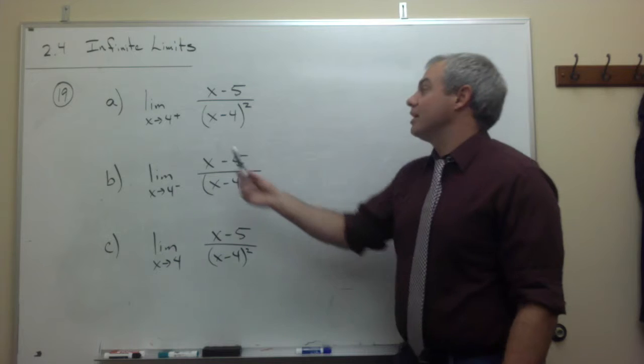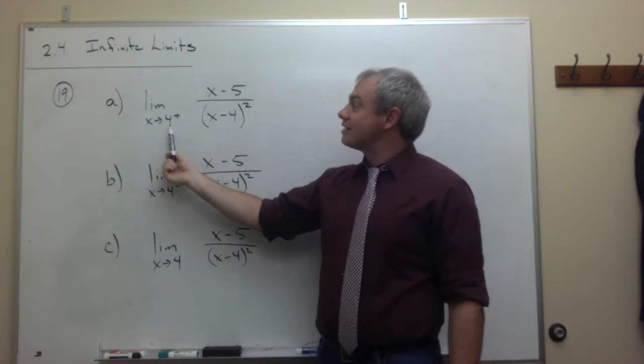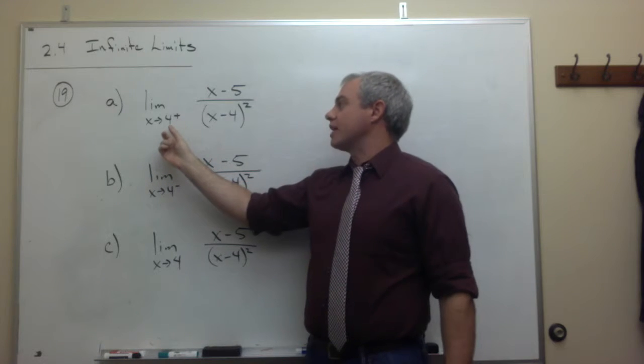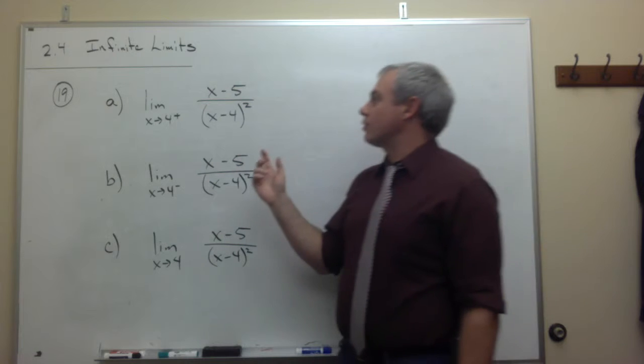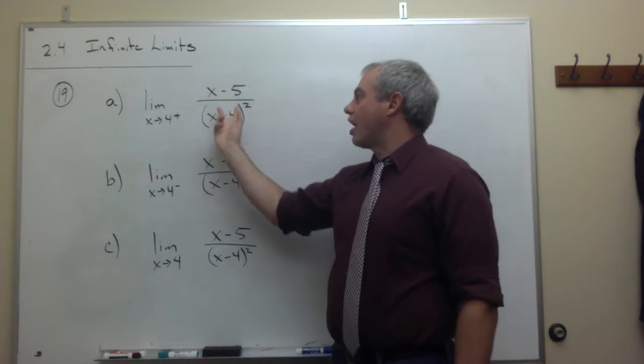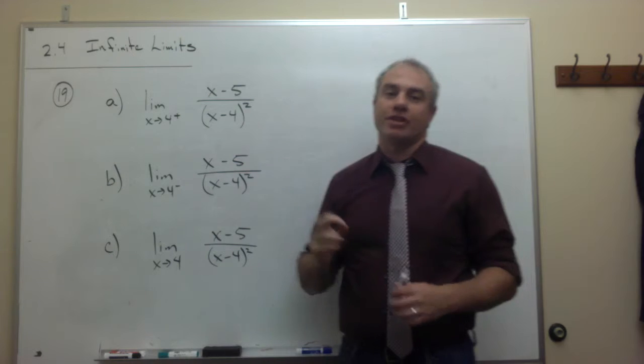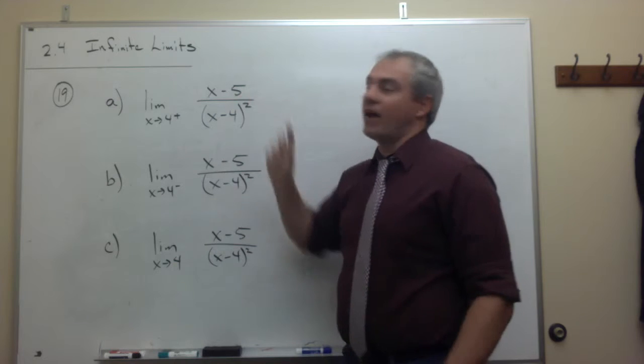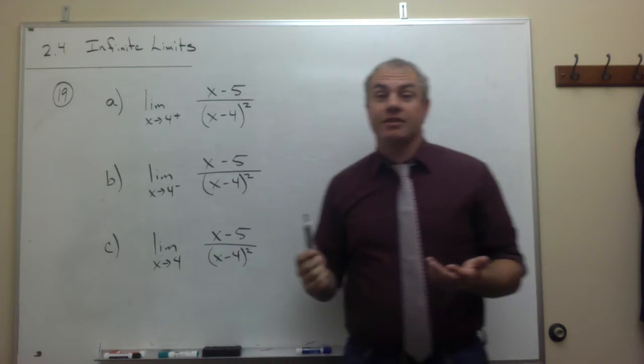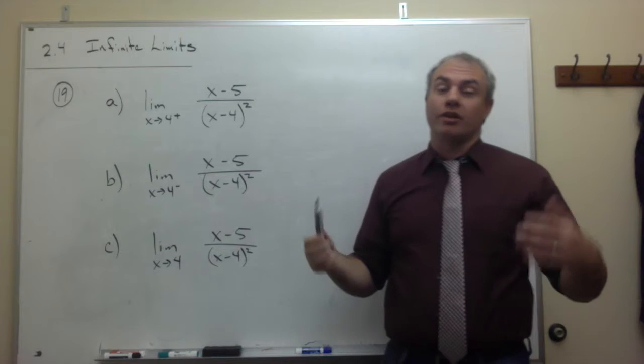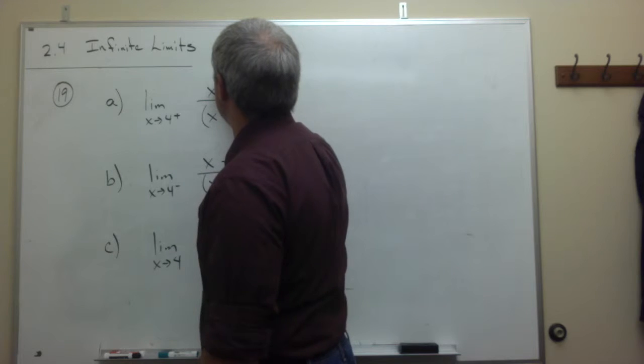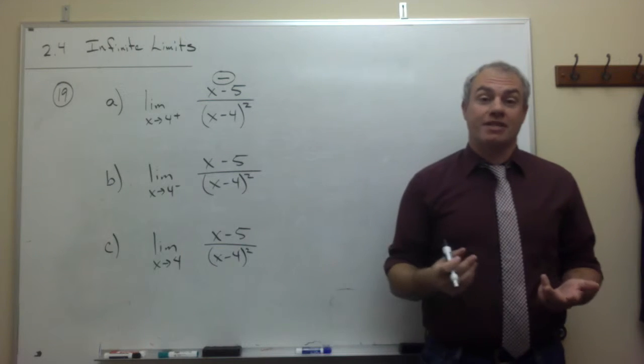So what I'm going to do is I'm going to take a number slightly bigger than 4. So we're approaching 4 from the right. So take a number slightly bigger than 4 and I ask the question, what does that do to the top and the bottom if I plug in a number that's just slightly bigger than 4? So something slightly bigger than 4 minus 5, well, that's a negative value, right? Something slightly bigger than 4, like 4.1 minus 5, is negative. I'm just going to remind myself of that by putting a negative sign on top. Just to remind me, the top is negative.